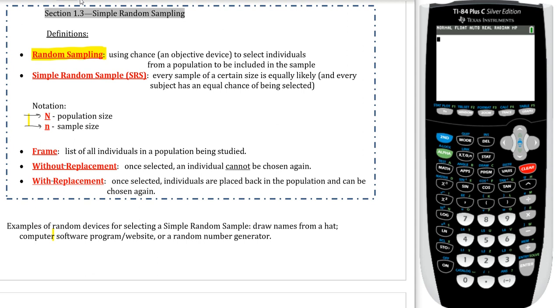If you have replacement, then that means that once selected, the individuals are placed back into the population and they could theoretically be chosen again. Now, this is kind of a weird one because a lot of people would look at this and say, well, why would you put the individual back into the population to be gathered again? You don't want to study that individual multiple times, do you? And the answer is no. However, there's a problem with doing something without replacement.